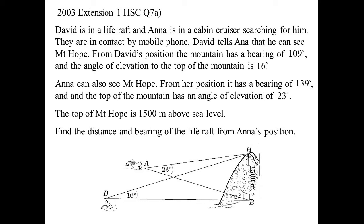That's Anna's trying to find him. And he says, oh, I can see Mount Hope. But fortunately, David's got some instruments with him. And he can tell that the bearing of Mount Hope is 109 degrees. Lucky he brought those instruments with him in his little life raft. Oh, and he can also work out the angle of elevation. And that's 16 degrees. Whew, that was lucky. But guess what? On that cabin cruiser, Anna, who's fixed up the way she spells her name, also has those instruments. And she can tell that her bearing is 139 degrees and the angle of elevation is 23 degrees.